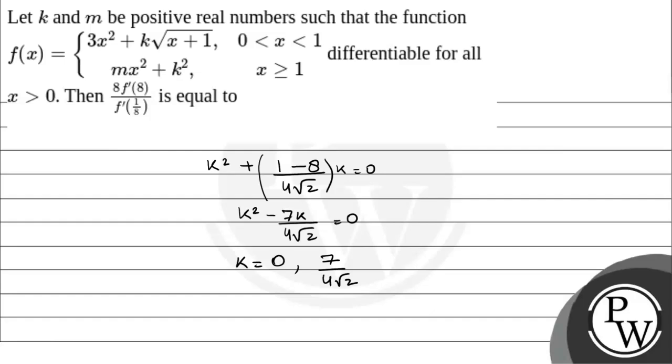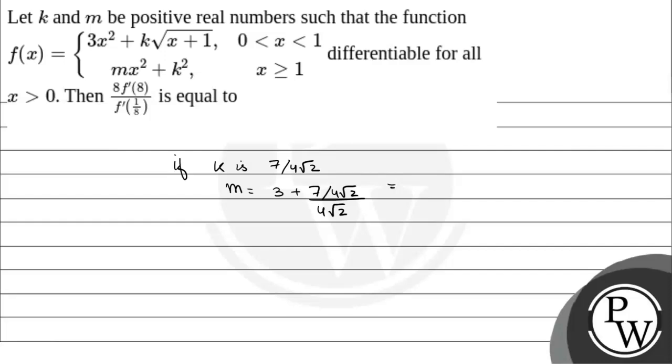Now we have two values. If k is 7/(4√2), then m equals (3 + 7/(4√2))/(4√2). Solving this gives 103/32. If k is 0, then m is clearly 3. Now f'(x) for the first part is 6x + k/(2√(x+1)), and for x ≥ 1, f'(x) = 2mx.